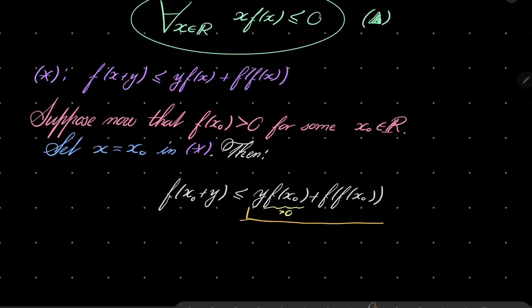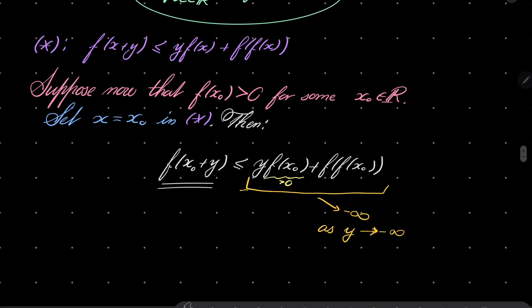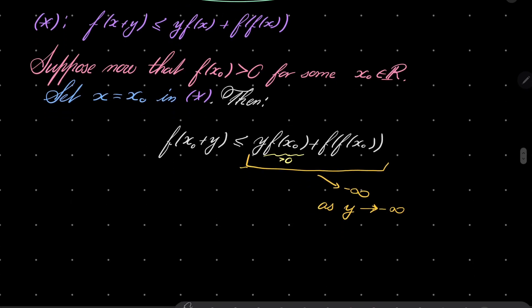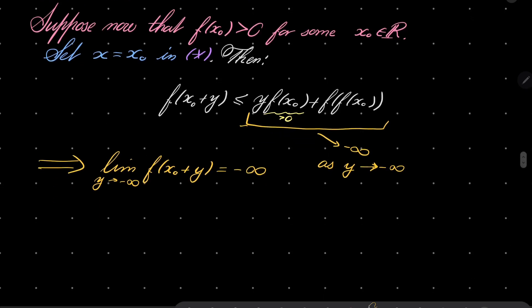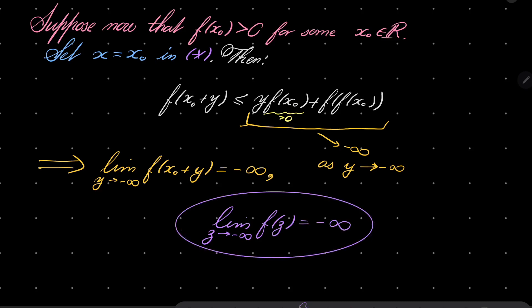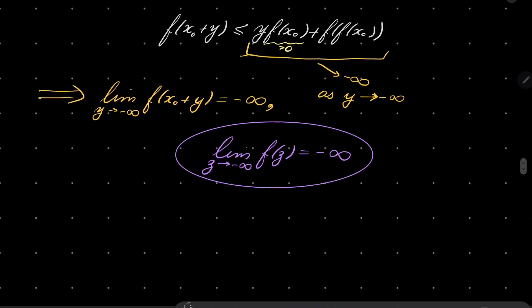Since our function is bounded above by something diverging to minus infinity, the limit of the left hand side as y goes to minus infinity is also minus infinity. Substituting y minus x-zero for y, we derive that the limit as z goes to minus infinity of f of z equals minus infinity.